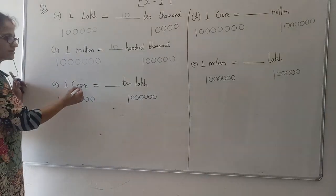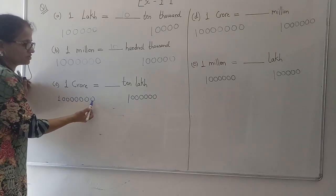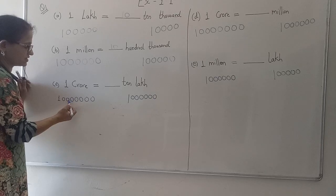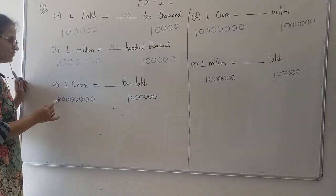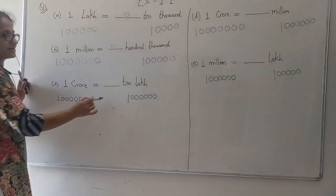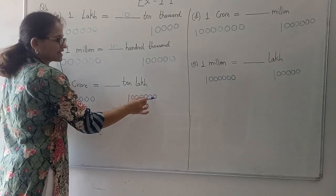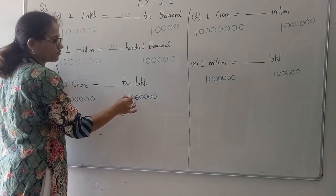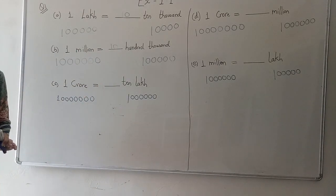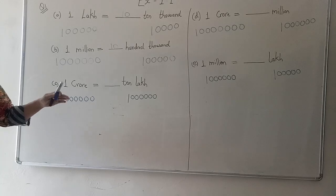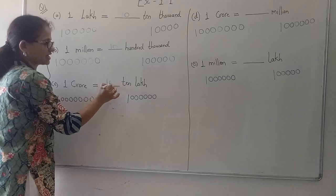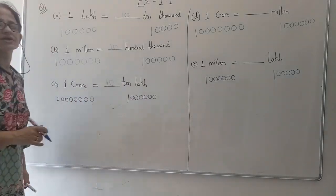Same way, one crore. If we write one crore from the back: ones, tens, hundred, thousand, ten thousand, lakh, ten lakh, crore. So in crore there are seven zeros. Now ten lakh has six zeros. Crore has seven and ten lakh has six. Now how many ten-lakhs together will form one crore? Ten ten-lakhs, because if I add one more zero to it, it will form one crore.